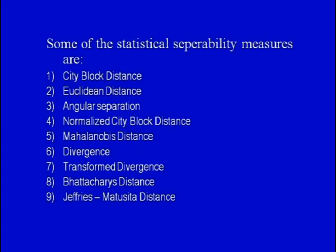There are many statistical separability measures available: city block distance, Euclidean distance, angular separation, normalized city block distance, Mahalanobis distance, divergence, transformed divergence, Bhattacharya distance, and Jeffrey-Matsushita distance. Of these, the separability measures at positions 7 and 8 — transformed divergence and Bhattacharya distance — are very commonly used by analysts. Let us now look at each separability measure one by one.